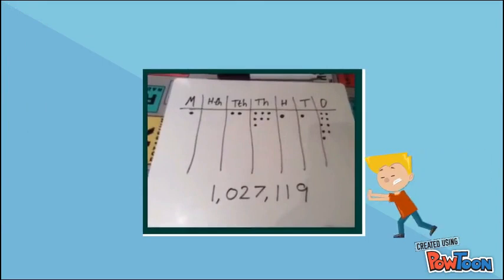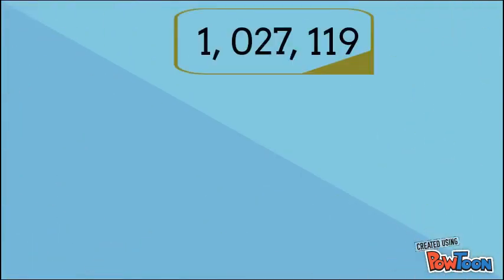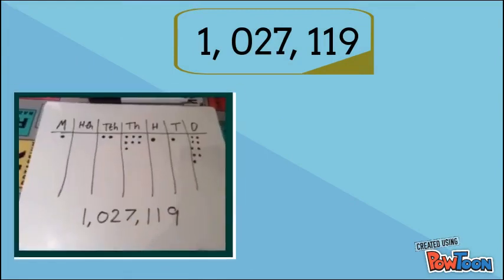Don't push it away like George's — what we do with the tools and images is always useful. So, here is the number, and using the image we drew, I know this first digit is one million, which we write like this.